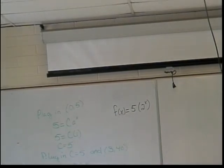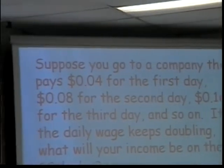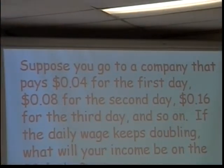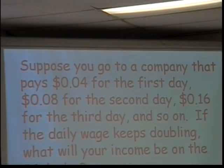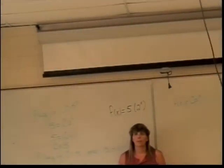All right, let's see where we are next. Suppose you go to a company that pays 4 cents for the first day, 8 cents for the second day, 16 cents for the third day, and so on. So, if the daily wage keeps doubling, what will your income be on the 30th day? Well, let's write a function. Let's find our function. F of x equals c times a to the x to figure this out. So, here's my question.